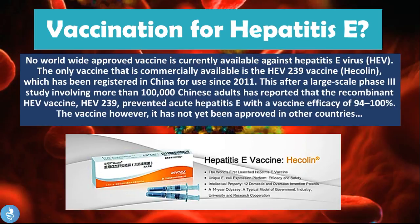Regarding vaccination, no worldwide approved vaccine is currently available against the hepatitis E virus. The only commercially available vaccine is HEV 239, called Hecolin, registered in China since 2011. This followed a large-scale phase 3 study involving more than 100,000 Chinese adults, which reported that the recombinant HEV vaccine HEV 239 prevented acute hepatitis E with a vaccine efficacy of 94 to 100 percent. The vaccine has not yet been approved in other countries.